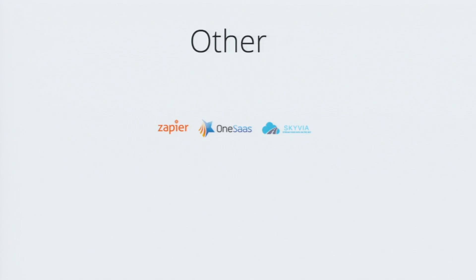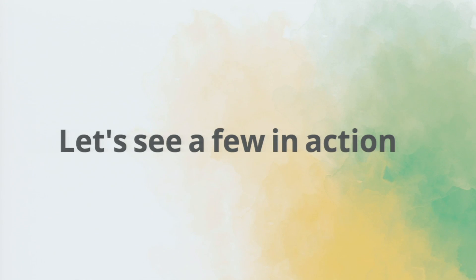There are also third-party integrators that can build integrations based upon our APIs on your behalf. Zapier is one that does it really well. OneSaaS is another. Their entire business is to build third-party integrations on behalf of customers for tools like Salesforce, Zoho, Zendesk — they take all the popular platforms and build integrations for you. So let's see a few in action.